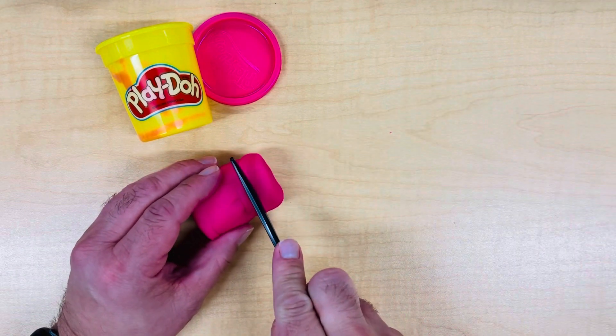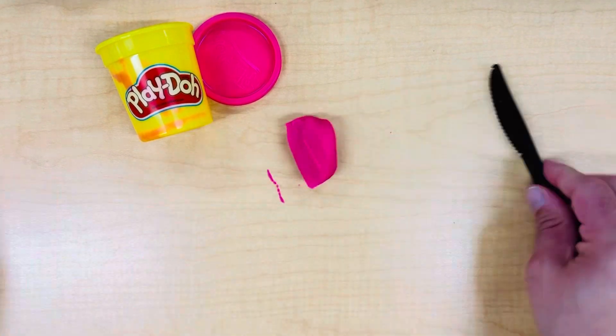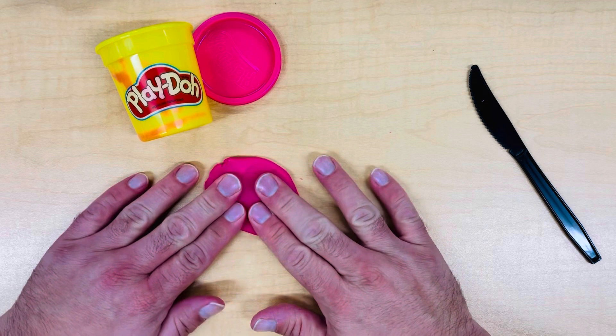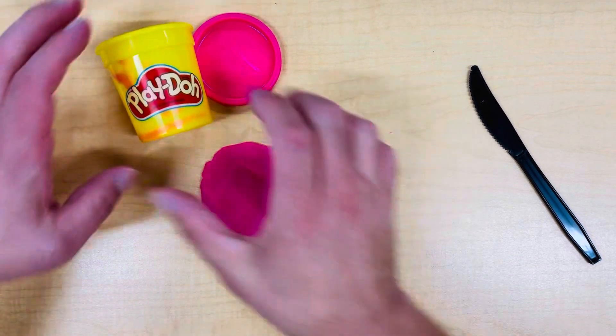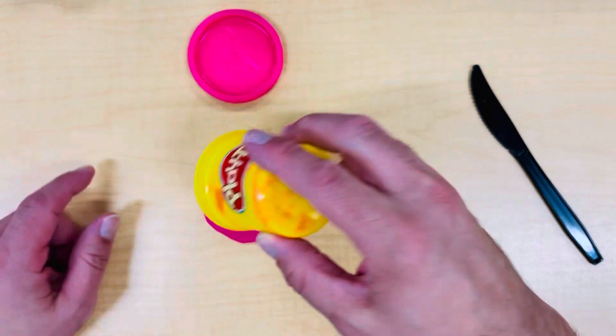Divide your Play-Doh into sections using the plastic cutting tool. Flatten out each section so that you can cut out a shape. We're going to use the Play-Doh can to cut out a circle.